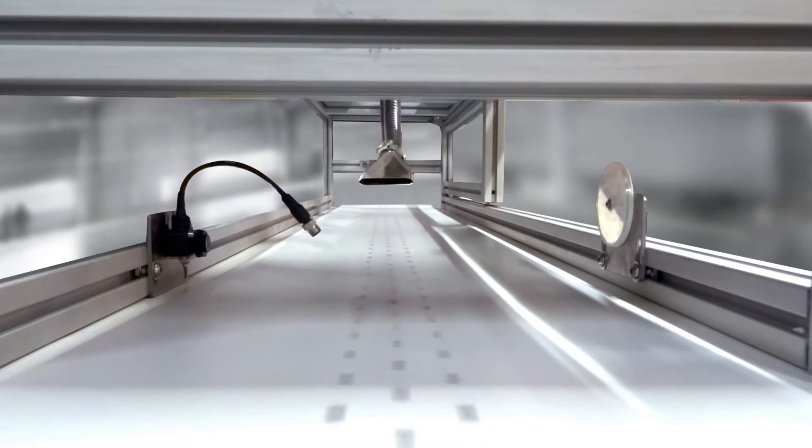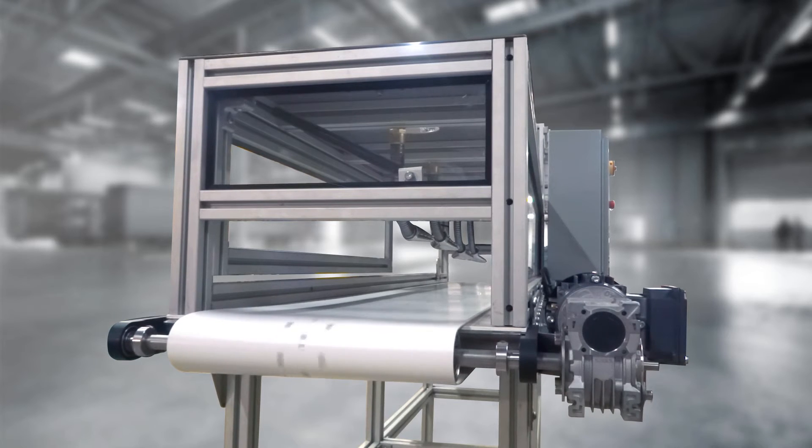Air is pulled down through the holes in the belt, grabbing onto materials as soon as they arrive. As the materials move along the conveyor, they are held firmly by the vacuum suction.